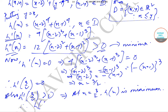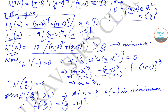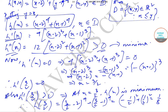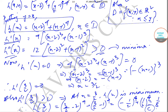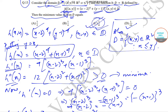Now let us find h(3/2), which will give us the required minimum value. That will be equal to (3/2 − 2)⁴ + (3/2 − 1)⁴ = (−1/2)⁴ + (1/2)⁴ = 1/16 + 1/16 = 1/8, which is option C. So the correct option is option C.